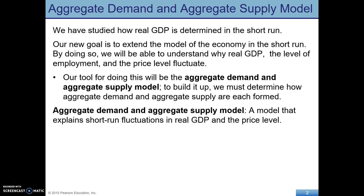The model we're going to use in this section is aggregate demand and aggregate supply. It's going to look just like what we've done before — what you might have seen in micro — except there are going to be some key differences that you really need to pay attention to, because it is a different model. It's based in macroeconomic theory. The curves are going to slope downward and upward for different reasons, so you need to be very comfortable with what's going on here.